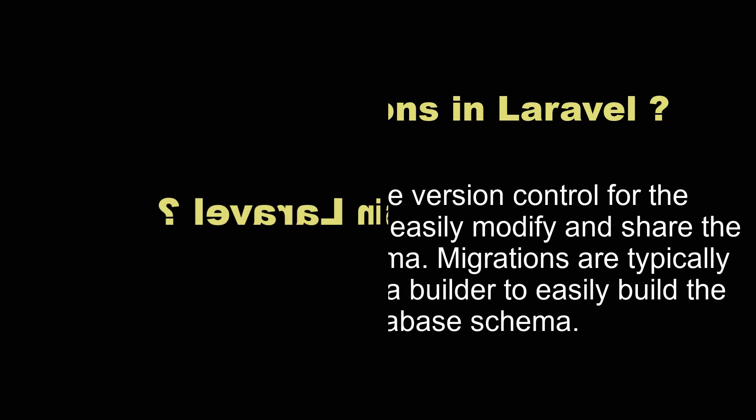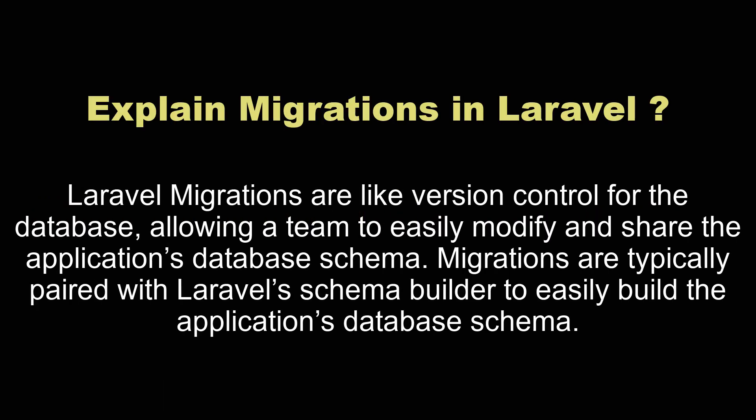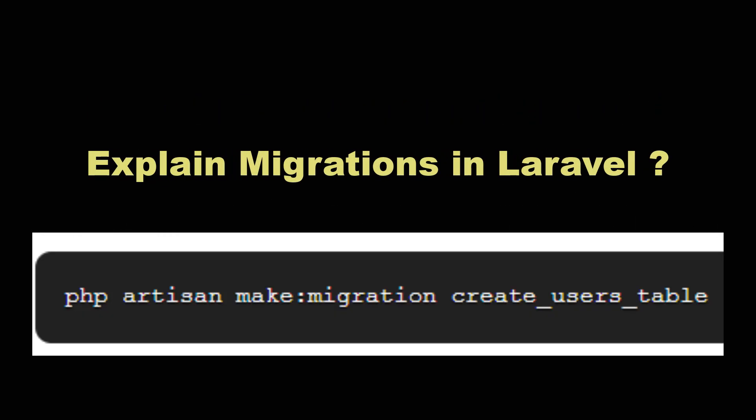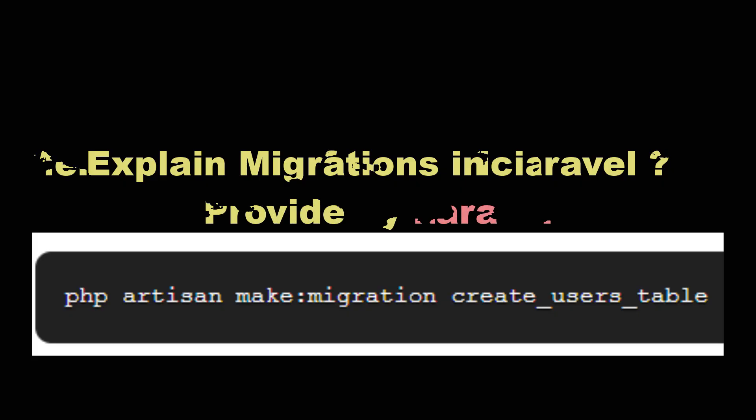Explain migrations in Laravel. Laravel migrations are like version control for the database, allowing a team to easily modify and share the application database schema. To generate a migration, you need to write the command: php artisan make:migration, followed by your table name.